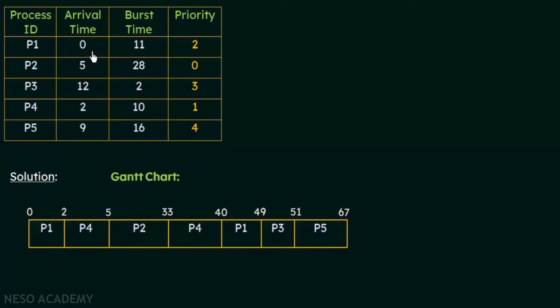Looking at the table, P1 arrives at time 0 and is the first process to arrive. Since there are no other processes at that time, P1 gets the CPU and begins its execution. P1 has to execute for 11 milliseconds — that is its burst time. But did P1 execute for the full 11 milliseconds? No, let's see why.